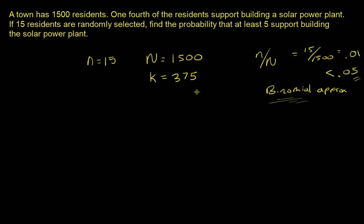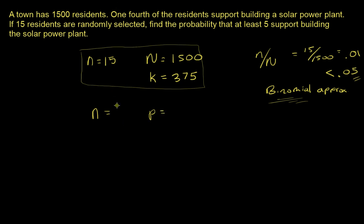For the binomial approximation you need n, N, and p. The sample size n stays the same at 15. p is the probability of success — the probability that someone supports building the power plant — which is one-fourth, or 0.25.